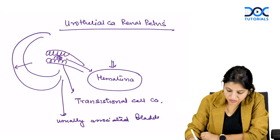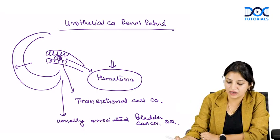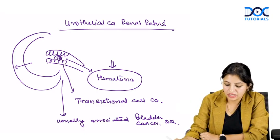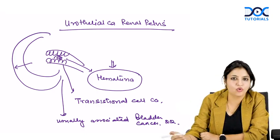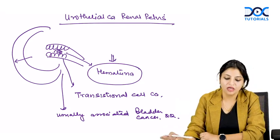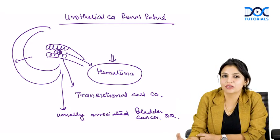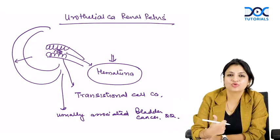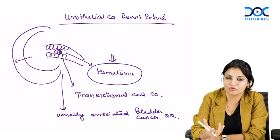There is usually associated bladder cancer, or at least dysplasia in the bladder — some bladder lesion will always be present when there is a urothelial cancer. So urothelial carcinoma of the renal pelvis manifests very early with hematuria or hydronephrosis and is associated with dysplasia or carcinoma in the bladder.